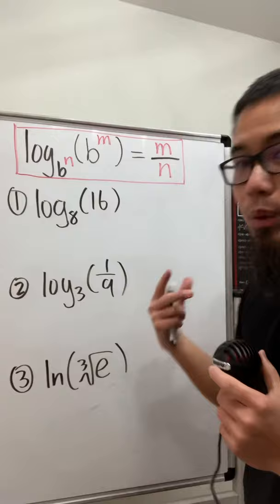I'm going to show you guys the easiest way to calculate logarithms without a calculator, and this is actually the secret weapon that we are going to use. Make sure the base is b to the n and then the input is b to the m, and we will just get m over n.